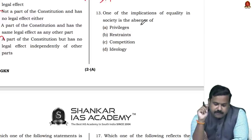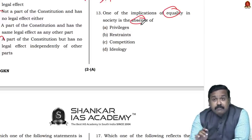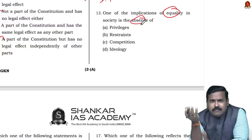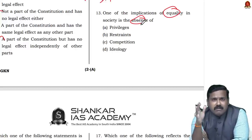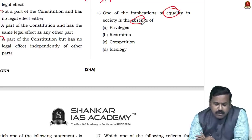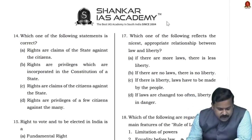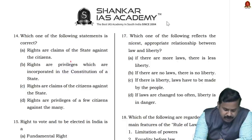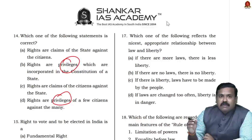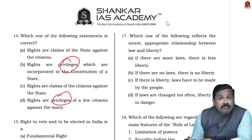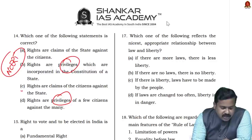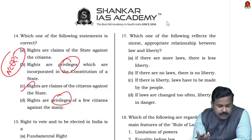One implication of equality in society is the absence of privilege. Once everyone is equal, no special privilege is given to anyone, because privilege contradicts equality. Question 14: Which is the correct statement about rights? Rights are not privileges — privileges come from your post or position. From NCERT, rights are a claim of citizens against the state, and sometimes against individuals. So the answer is C — rights are claims of citizens against the state.